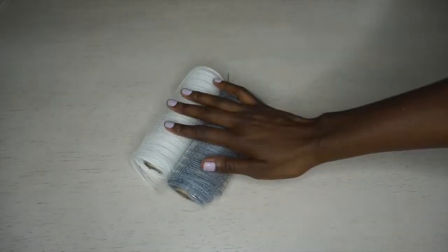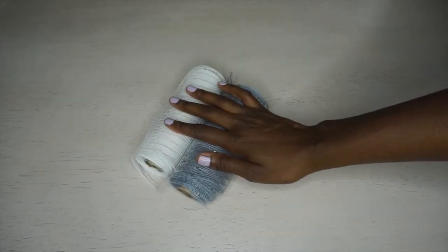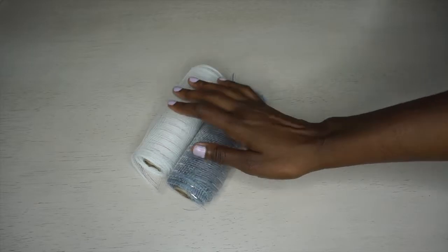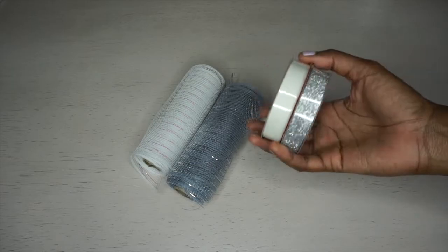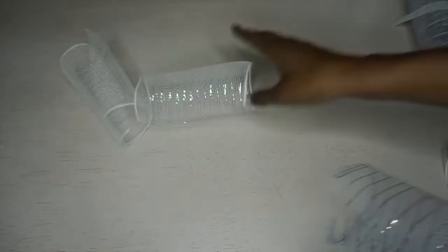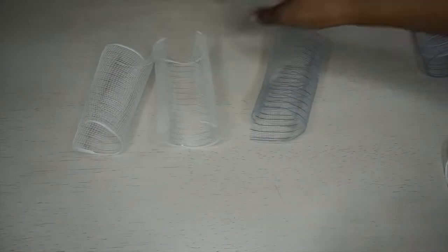Alright, let's get started. So the first thing you're going to do is take your deco mesh and cut it into 8 inch long pieces. I'm also going to take my ribbon and cut it into 8 inch long pieces. And then I'm going to make my bundles. I decided for each bundle I want two pieces of white deco mesh and one piece of silver deco mesh.